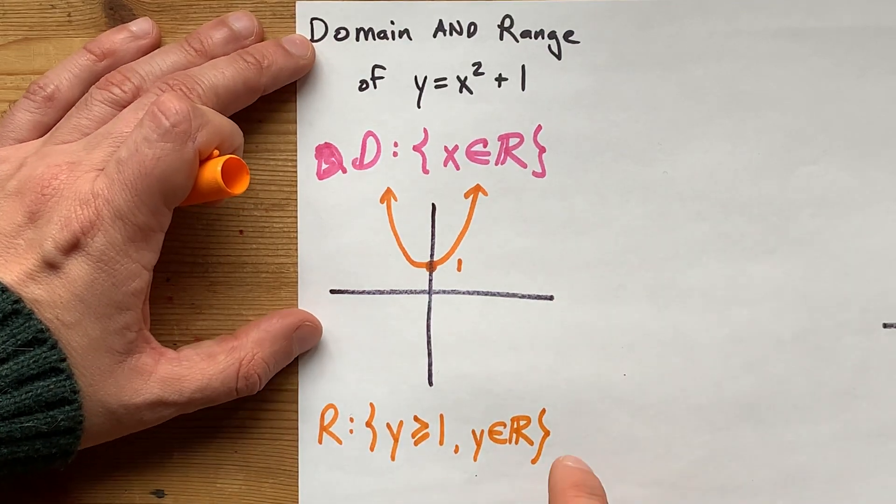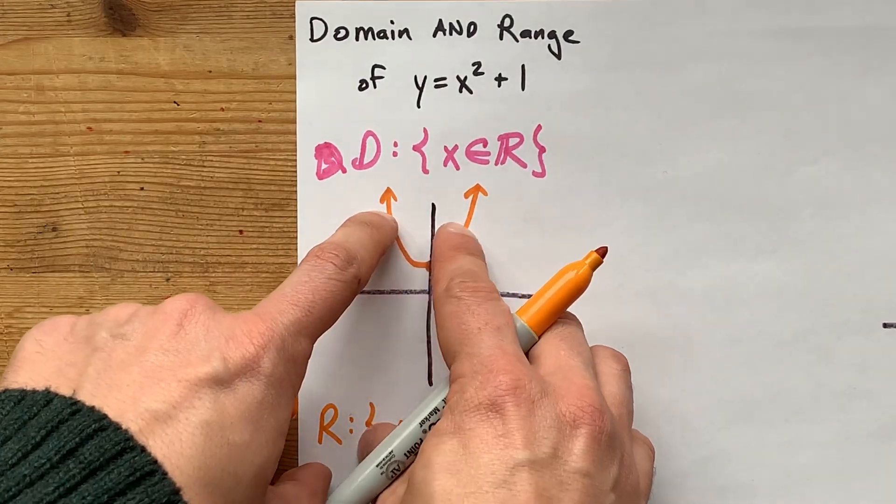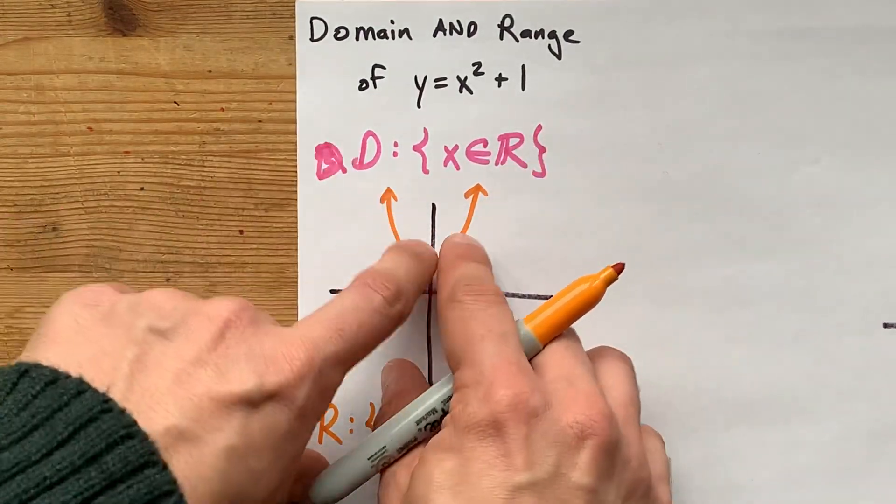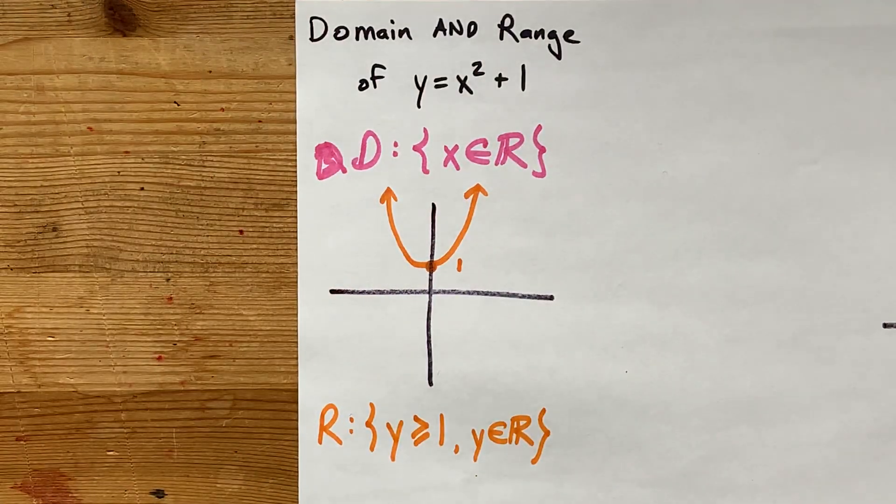There's your answer. I just want to point out, x∈R for the domain is the fact that this parabola goes forever to the left and right. And I know it looks like it curves upward, but that's just because of the scale on a linear graph.